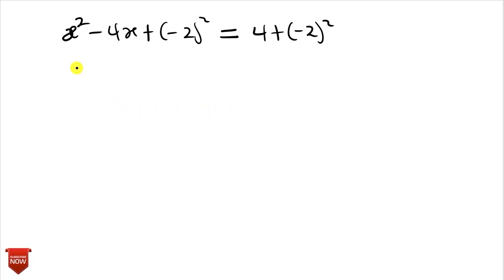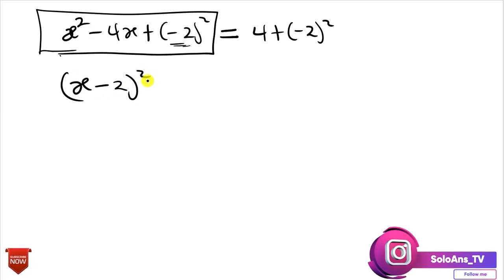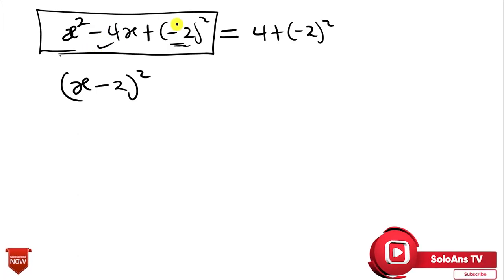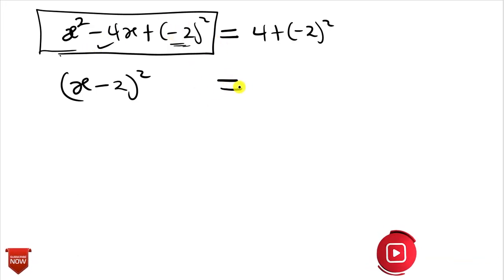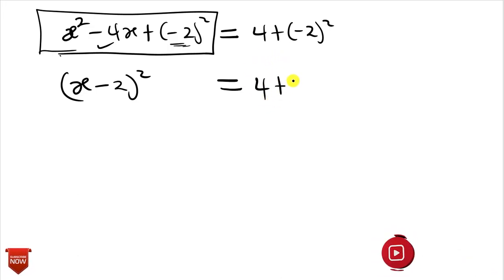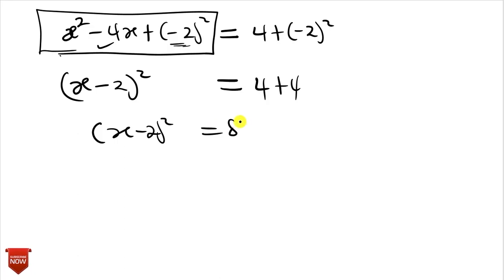After this step, the left-hand side becomes a perfect square expression. We pick the variable x and the negative 2, writing it as (x minus 2) squared. We bring our equal sign, then simplify the right-hand side: 4 plus 4 equals 8. So we now have (x minus 2) squared equals 8.